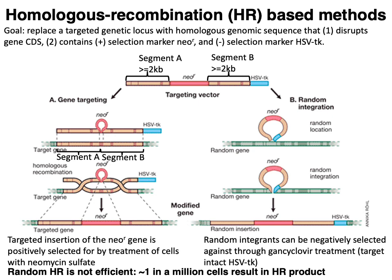Key to HR-based methods is identifying a hopefully long target region on your genome of interest, like the first exon of a coding gene you want to disrupt. Once you've identified that target region, you divide it into two consecutive parts called segment A and segment B, where each segment has to be at least around 2 kb in length, although in practice people typically use about 6 to 14 kb.